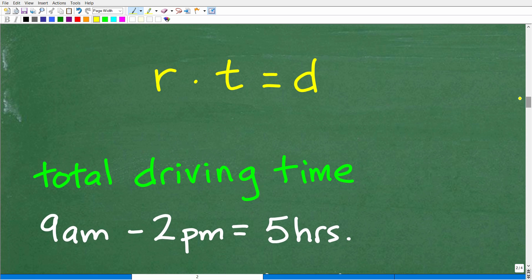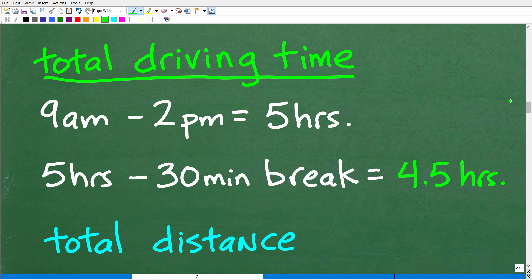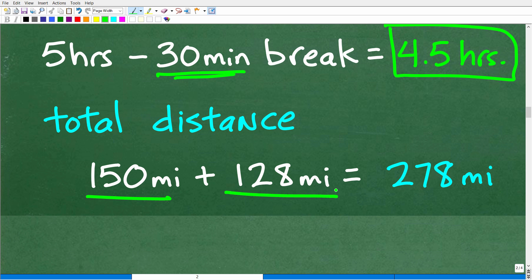And, of course, that is figuring out the actual specific units here or the actual components to this equation. So, that's rate, time, and distance. Rate, time, and distance. So, the question is asking for what is the average rate. So, this is what we're looking for right here. So, what do we have? Well, we have time and we have distance. So, what is the total driving time? Well, this truck driver drove from 9 a.m. to 2 p.m. Okay, that's 5 hours, but he took a 30-minute break. So, 5 hours minus 30 minutes is 4.5 hours of actual driving time. So, what is the total distance? Well, this is pretty easy to figure out. That's 150 miles plus 128 miles. So, the total distance is 278 miles.